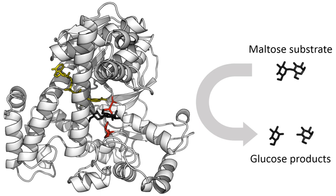Enzymes are generally globular proteins, acting alone or in larger complexes. The sequence of the amino acids specifies the structure, which in turn determines the catalytic activity of the enzyme. Although structure determines function, a novel enzymatic activity cannot yet be predicted from structure alone. Enzyme structures unfold when heated or exposed to chemical denaturants, and this disruption to the structure typically causes a loss of activity.